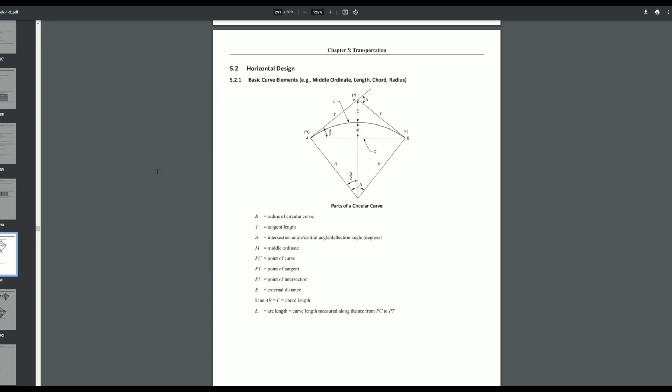And then here you can see it says horizontal design. So basically lays out the structure for all our horizontal curvature elements. So again, in order to find the PT, we first need to find the PC and L.